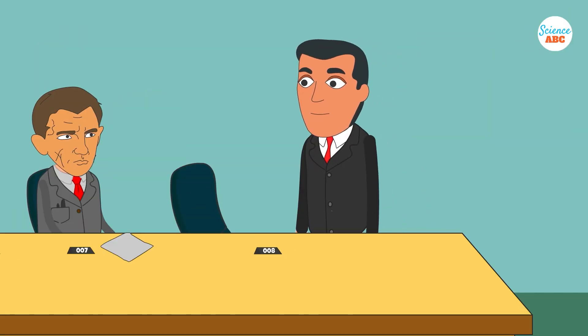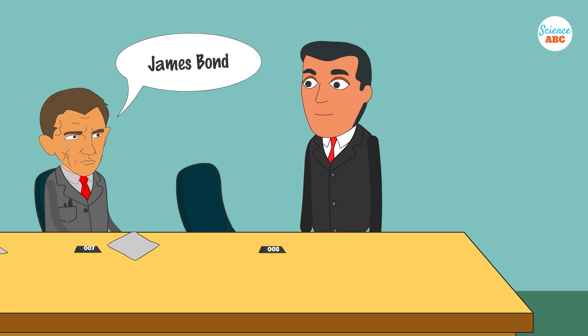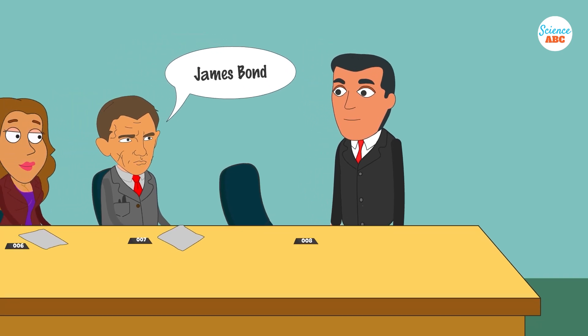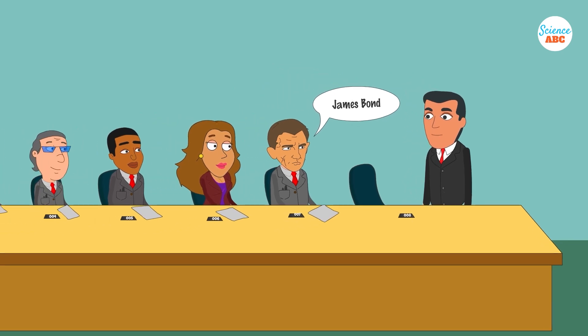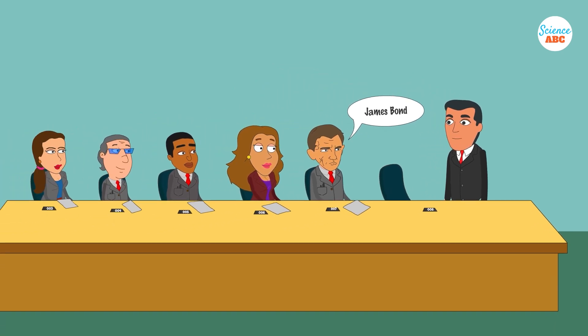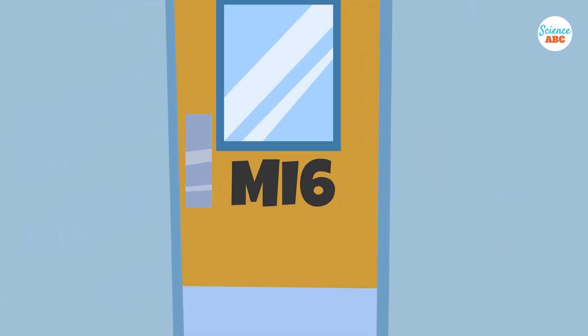Your best friend and colleague is also a secret agent with the codename 007. You know him as Bond, James Bond. Although you both have different codenames and personalities, you share one thing in common: you are members of the same secret agency, just as isotopes belong to the same element family.